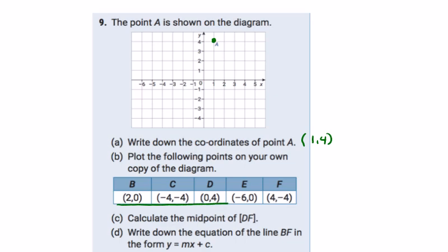And then we're asked to plot these points as well. B is 2, 0. C is minus 4, minus 4. Take your time. It is easy to make mistakes. D is 0, 4. E is minus 6, 0. And F is 4, minus 4.